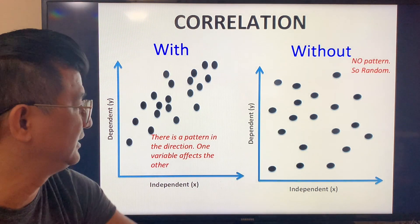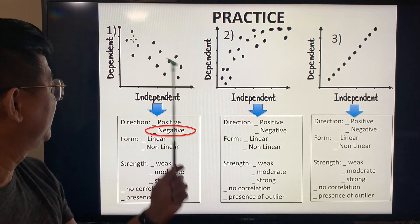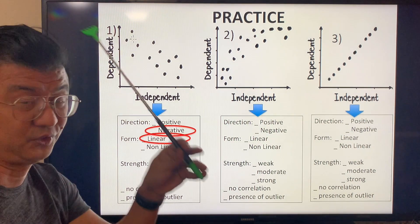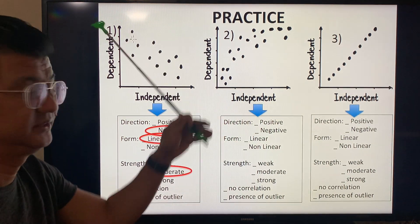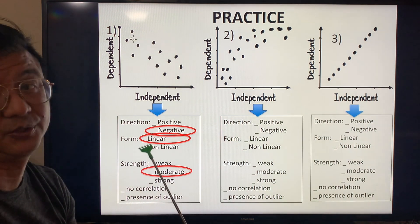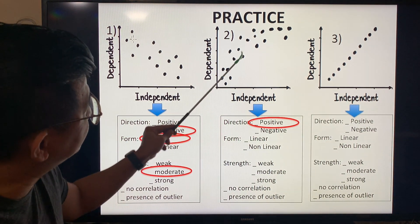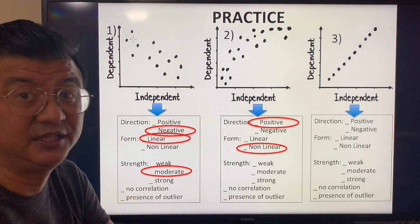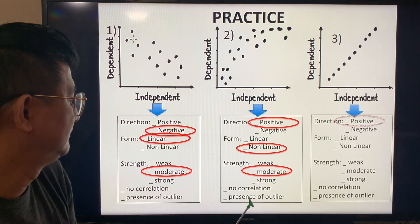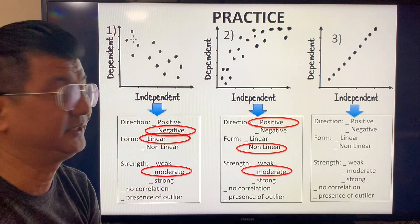Practice: the first example is negative direction, linear, and moderate — there is a relationship and no outlier. The second example is positive, non-linear because the points curve, moderate, with a relationship and no outlier.